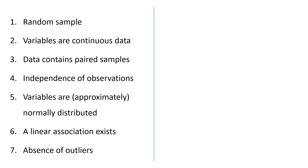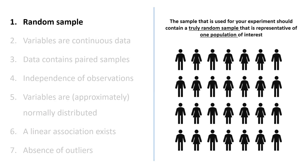The first assumption is that your sample is random. The sample used for your experiment should contain a truly random sample that is representative of one population of interest. This is determined by your experimental setup. For example, when recruiting participants in your study, were the participants randomly recruited? If so, then you are good to go with this assumption.